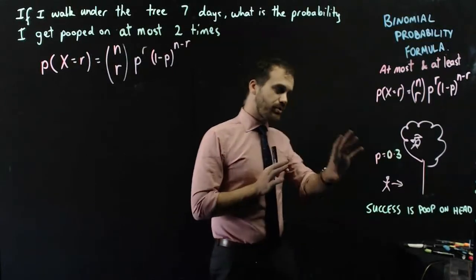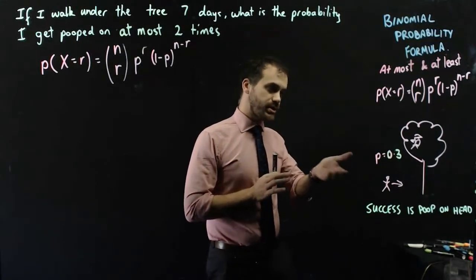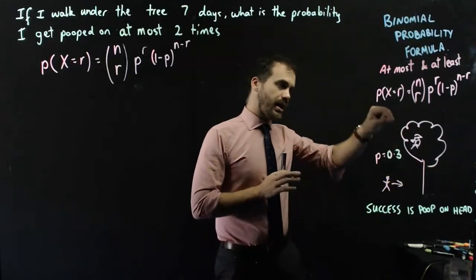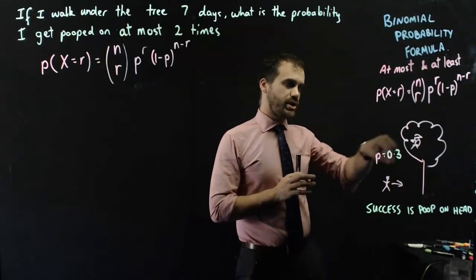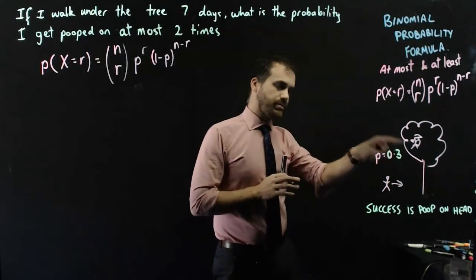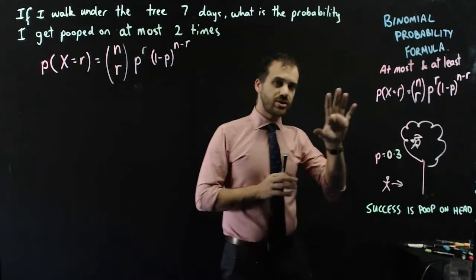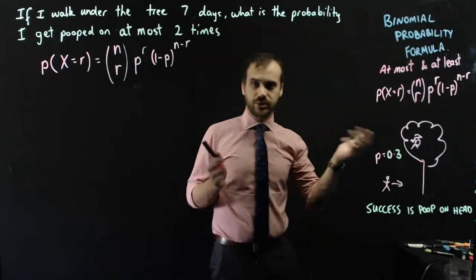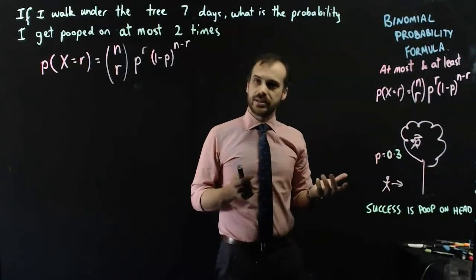So binomial probability. Again, this time we're still going to talk about a person walking under a tree and having a 0.3 chance that he gets pooped on the head by a bird. But this time we're going to talk about at most and at least. Now, if you haven't watched the previous video, that didn't make any sense.